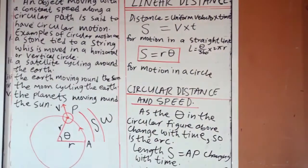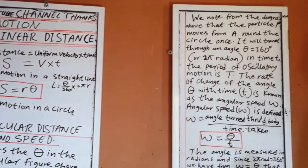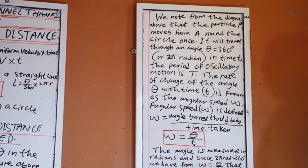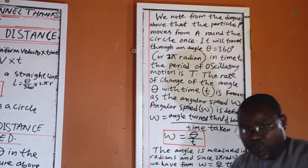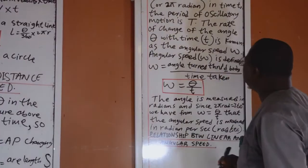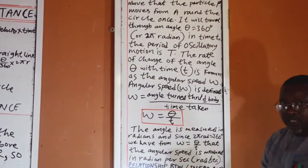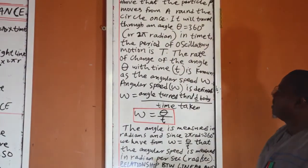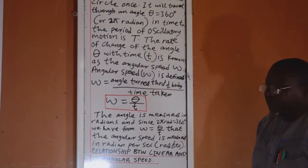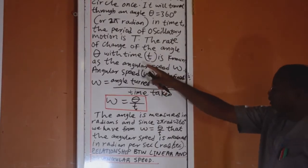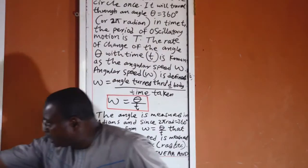That the particle P, this is particle P, move from A up to that point, around the circle once. If you travel through an angle theta is equal to 360 degrees. The maximum angle in the circle is 360 degrees. And this is also equal to 2 pi radians. In time t, the period of oscillatory motion is given by t. The rate of change of the angle theta with time t is known as the angular speed.